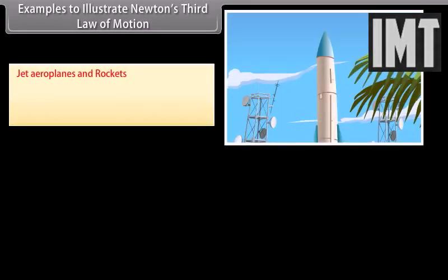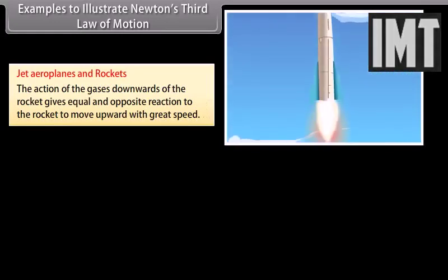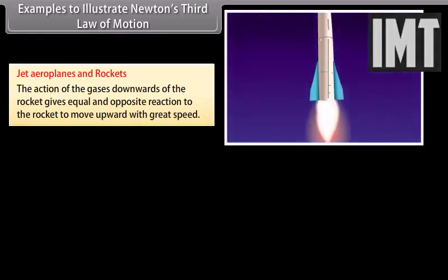Jet aeroplanes and rockets: the action of the gases downwards of the rocket gives equal and opposite reaction to the rocket to move upward with great speed.